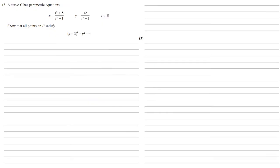A curve C has parametric equations x equals t squared plus 5 over t squared plus 1 and y equals 4t over t squared plus 1. We need to show that all points on C satisfy the equation x minus 3 all squared plus y squared equals 4.